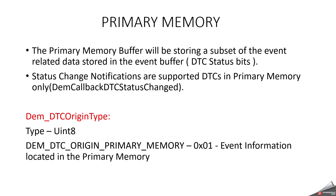Primary Memory: The primary memory stores a subset of event related data, including DTC status bits. Whenever an event is reported, it will go to the primary memory based on your requirement and DEM design. Status change notifications for supported DTCs are handled in primary memory via the DEM callback DTC status changed. To select memory type, the DEM DTC origin type is used — it is of type uint8 based on Autosar 4.2.2. The enum DEM_DTC_ORIGIN_PRIMARY_MEMORY has indicator value 0x01, representing event information located in the primary memory.